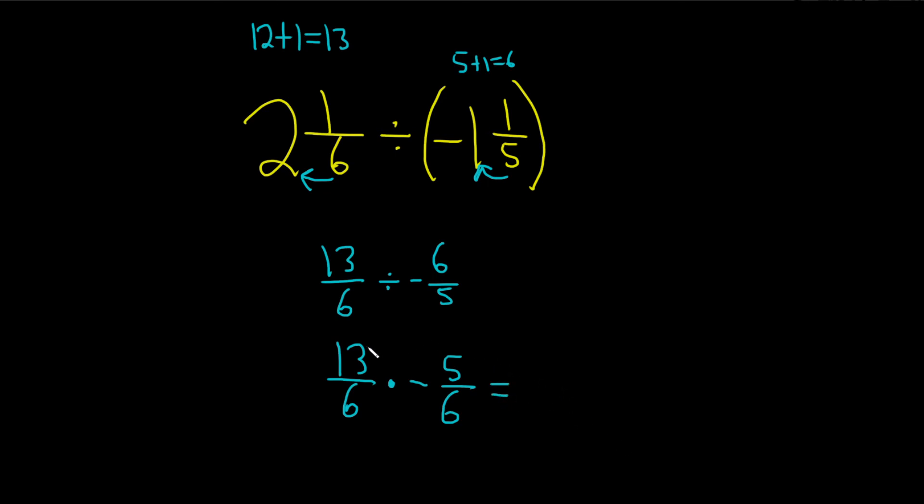So now we multiply straight across. So 13 times 5, well, how do you do that? The way I do it is 10 times 5 is 50, 5 times 3 is 15, you add them and you get 65.